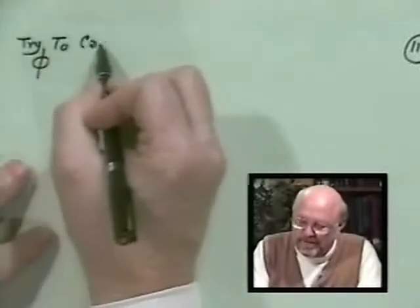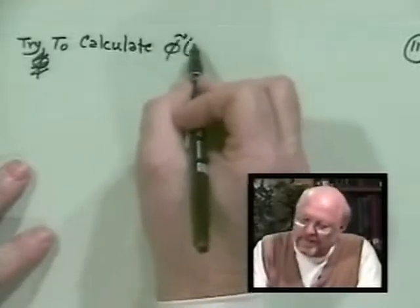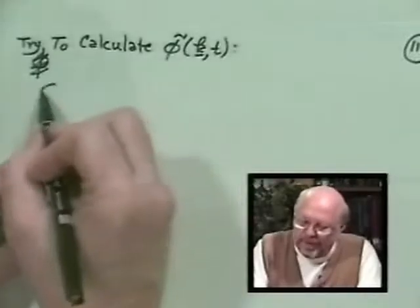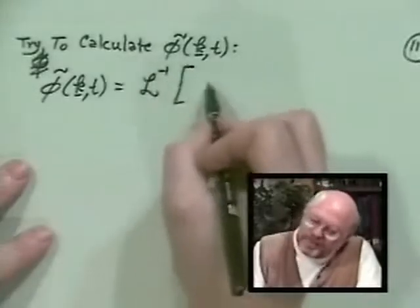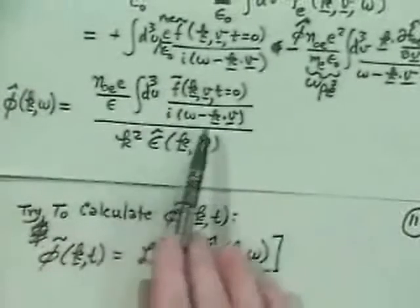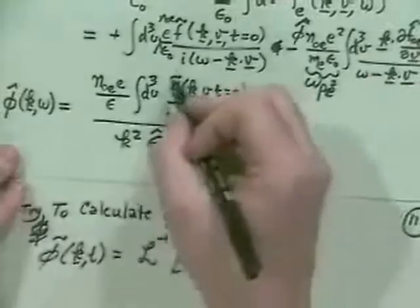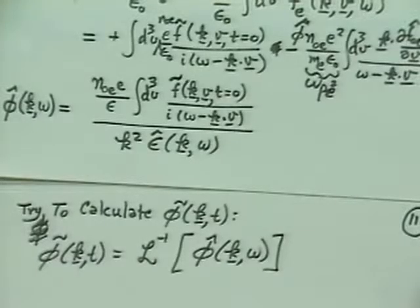To find φ̃(k, t), we would have to take the inverse Laplace transform. So let's try to calculate φ̃(k, t): it would be the inverse Laplace transform of φ̂(k, ω). All we have to do is look at our expression for φ̂ and, taking account of the dielectric constant, calculate this — though that turns out to be a non-trivial job.